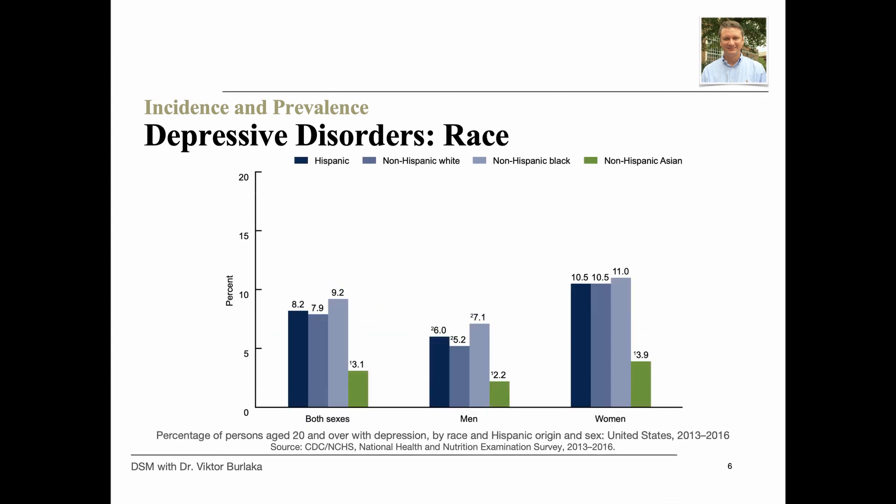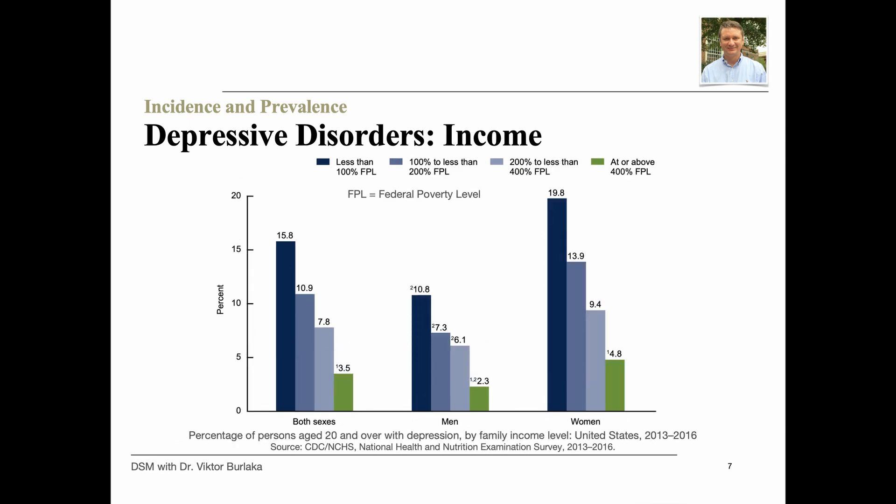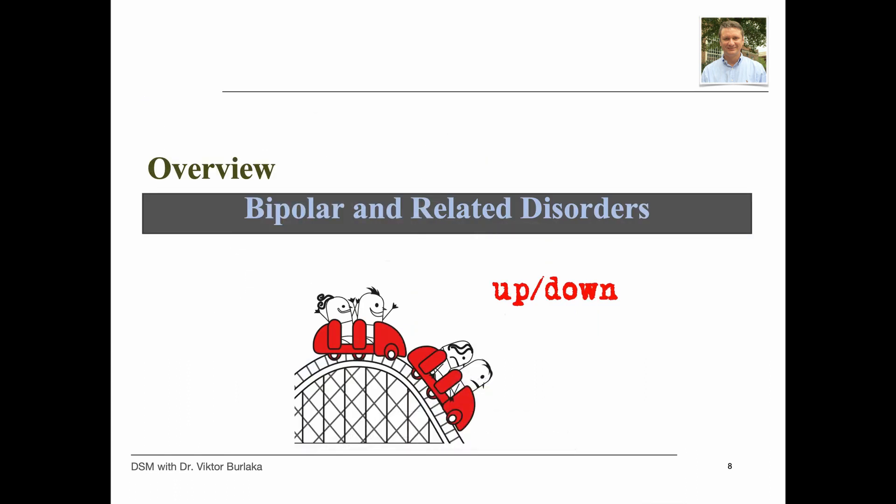Looking at racial disparities, evidence from the National Health and Nutrition Examination Survey suggests that depression was lower among non-Hispanic Asian adults compared with Hispanic, non-Hispanic Black, or non-Hispanic White adults. Income inequality is another risk factor. The prevalence of depression among adults decreased as family income levels increased. Overall, 15.8% of adults from families living below the federal poverty level had depression, decreasing to 3.5% among adults at or above 400% of the federal poverty level. Men at or above 400% of the federal poverty level had the lowest prevalence at 2.3%, while women below the federal poverty level had the highest at 19.8%.